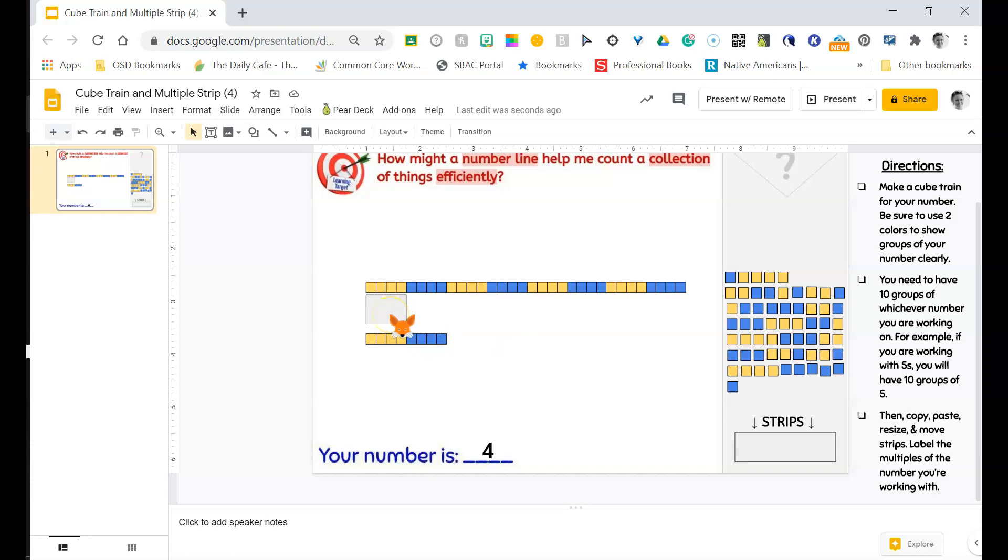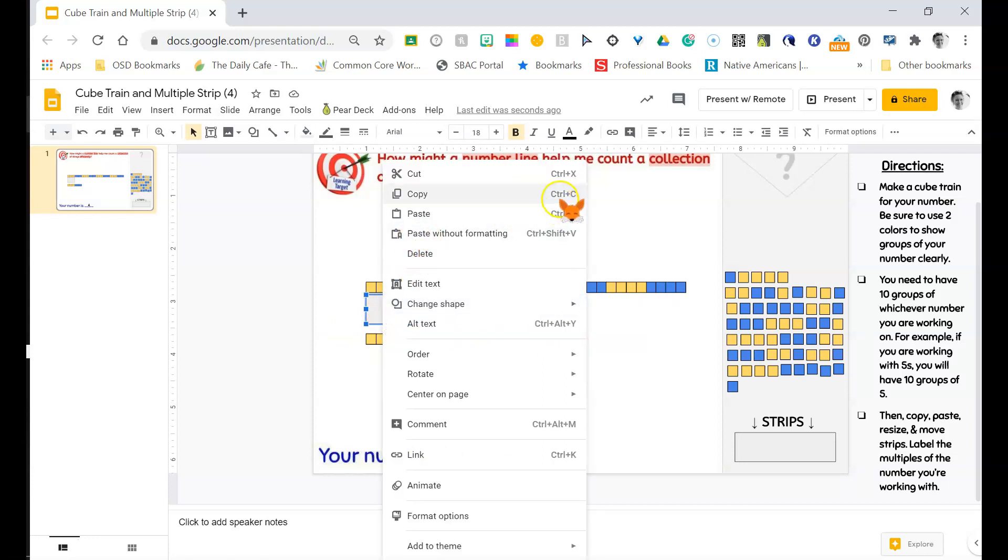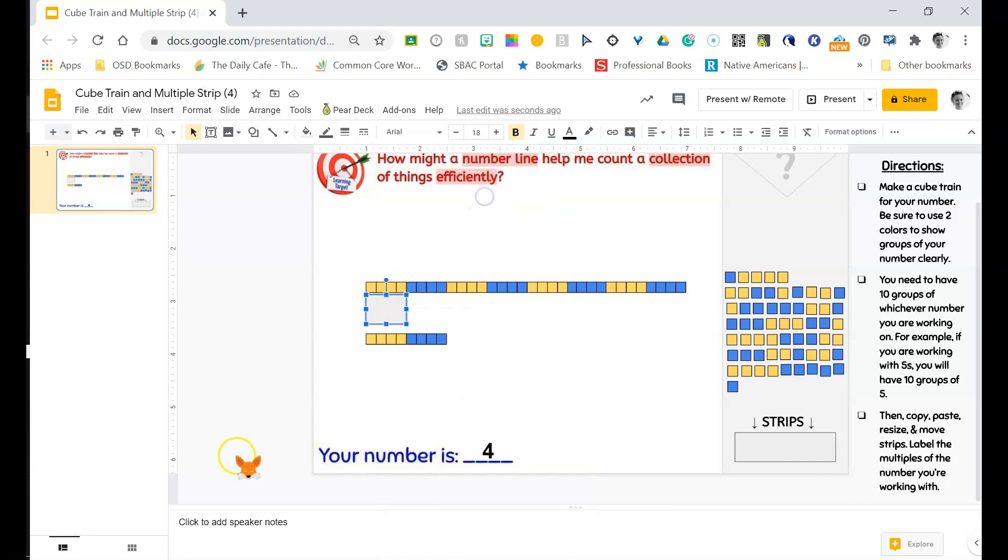Now I am going to copy and paste it so that I make a nice strip that runs underneath my train. So remember I'm going to either right click and hit control C or I can just hit the button here and then I'm going to paste. And I'm going to do that until I have ten strips all lined up next to each other. All right I'm going to fast forward again.